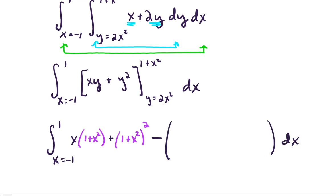So, make some big parentheses here. Plugging in the lower limit of integration, Y equals 2X squared, we're going to have an X times 2X squared plus Y squared. And substituting in for Y, we have a 2X squared squared.